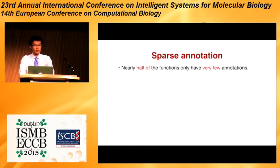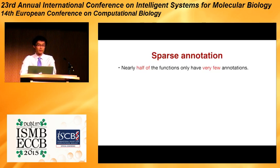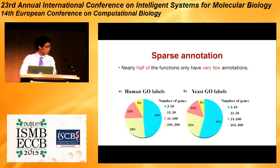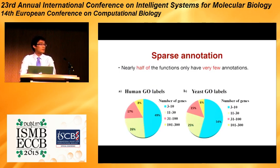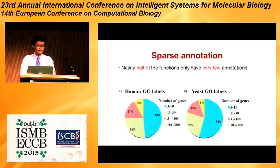However, the MIPS dataset is very small, and different from MIPS, gene ontology function is very sparse. Nearly half of the functions only have very few annotations. Here I show the statistics of the human dataset and the yeast dataset. About 15% of human GO labels have only been annotated by less than 10 genes, and about 18% of the yeast GO labels have been annotated by less than 13 genes. As a result, for those sparsely annotated functions, we will not have enough training samples and a simple classifier will very easily be overfit.